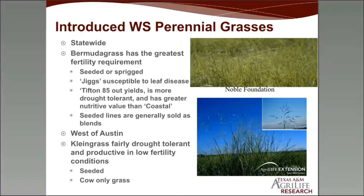Jiggs bermuda is common in our area but can be susceptible to some leaf diseases — it doesn't kill the stand but may set it back in wet years. Tifton 85 will out-yield any other available hybrid, is more drought tolerant, and has greater nutritive value than coastal. Tifton 85 is bermudagrass hybridized with star grass, which lends it better yield and nutritive value. West of Austin, Klein grass is a good option — drought tolerant, productive in low fertility conditions, requiring less fertilizer than bermudagrass, but it is a cow-only grass.